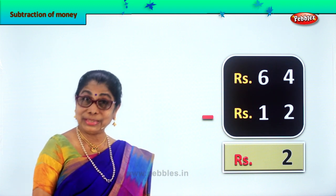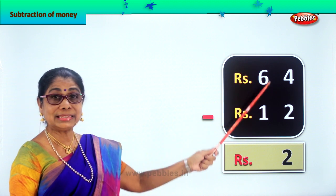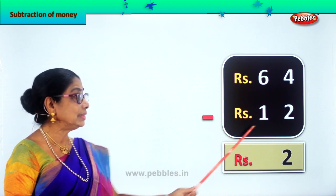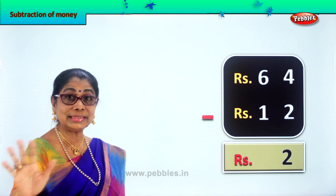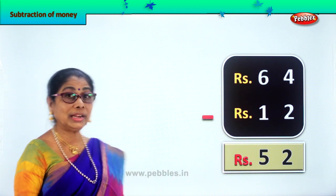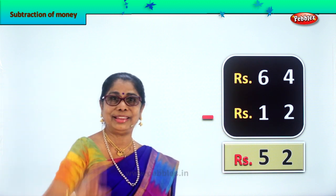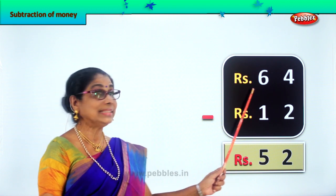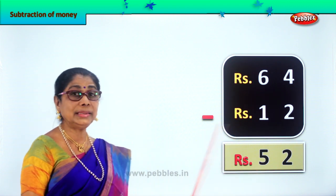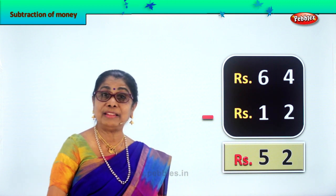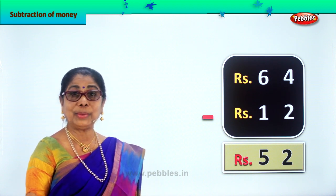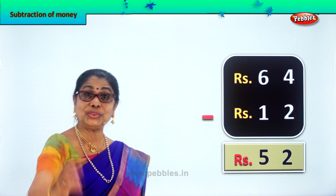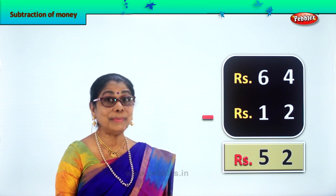Now you go to the tens place. 6 minus 1 gives you 5. So rupees 64 minus rupees 12 — you get the answer rupees 52. That is your answer. Did you enjoy subtraction of money? Yes, subtraction of money.